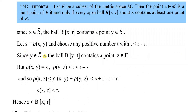Since x belongs to E̅̅, let B(x, r) be any open ball. By theorem 5.5D, it contains at least one point — let y belong to Ē. Let s equal ρ(x, y), the distance between x and y. Let us choose any positive number t with t less than r minus s. Since y belongs to Ē, the ball B(y, t) contains a point z belonging to E.